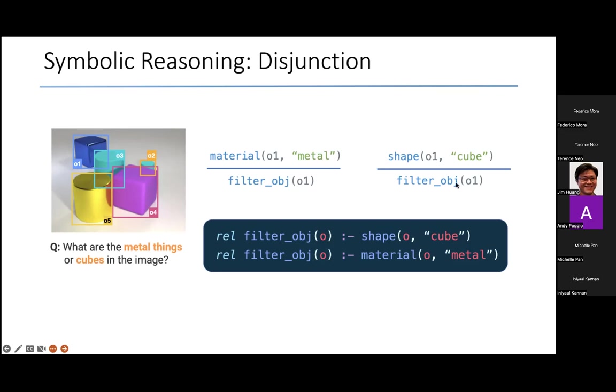Because in this case, O1 happens to be both a metal and a cube. But if either one of these were true, that would be enough for O1 to be filtered.